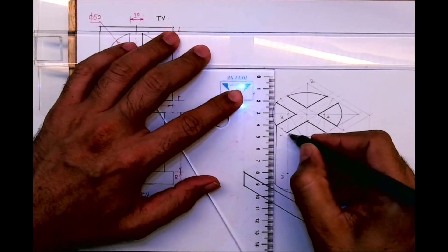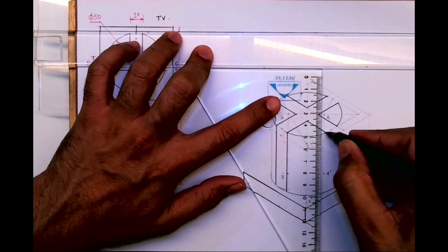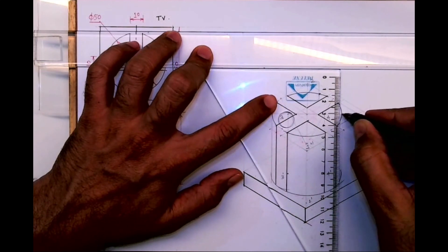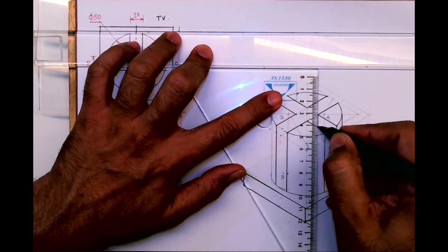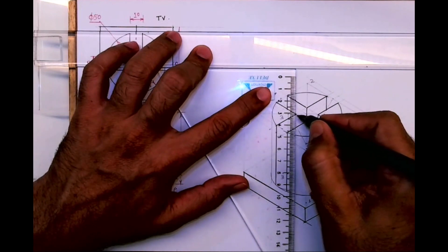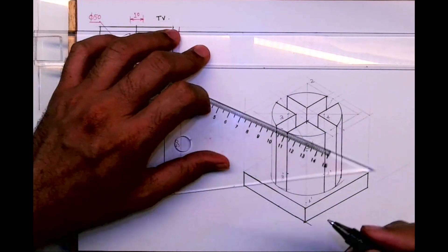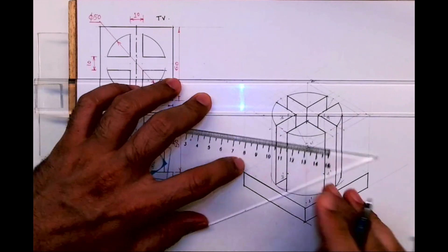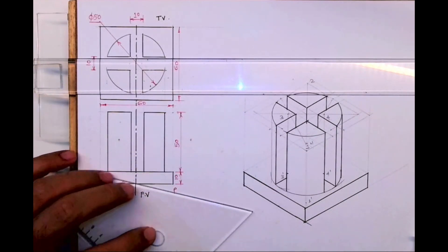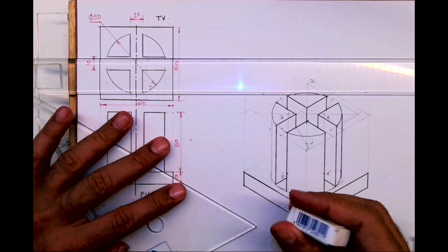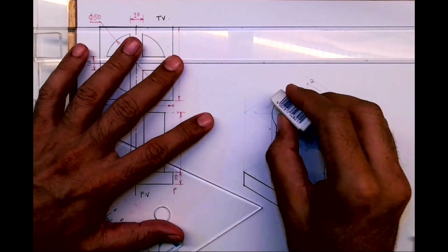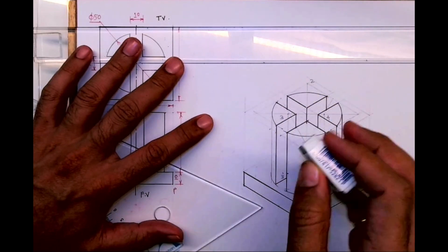Then you draw this line down, this line down. All these lines you can draw down. This is tangent, this will go inside. Now we can draw remaining lines dark, like this tangent.